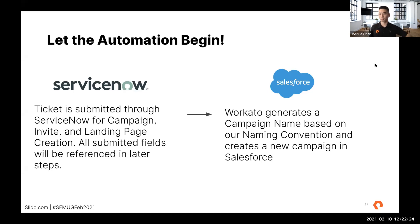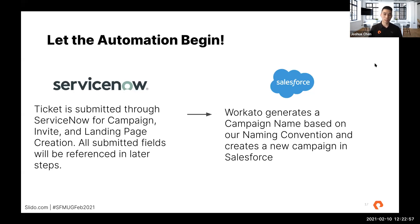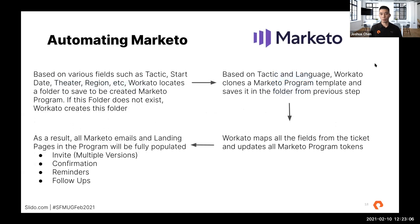The first step is Workato takes in the different pieces of data and generates a campaign name based on the naming convention we defined. Before, we used to have a Google Sheet generator that our agencies needed to go in and type everything to generate a campaign name before going into Salesforce and Marketo to update those — repetitive work that took five to ten minutes, and sometimes they weren't even following it correctly. So Workato became our campaign name generator. Once that is done, Workato goes into Salesforce, creates a new campaign with that campaign name, and fills out all the required fields within the campaign object with details from the ticket.